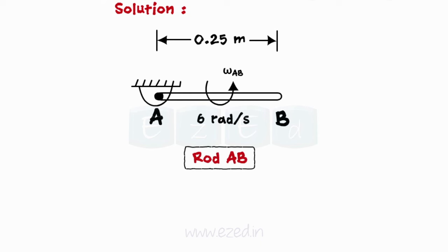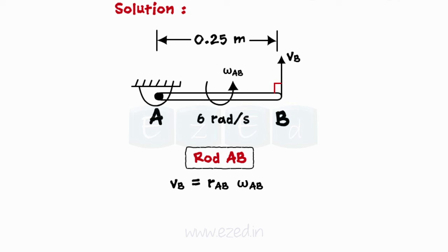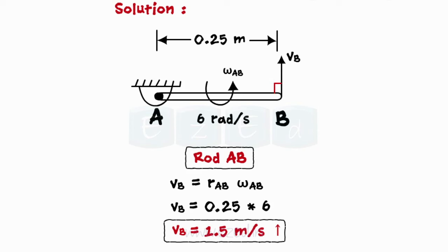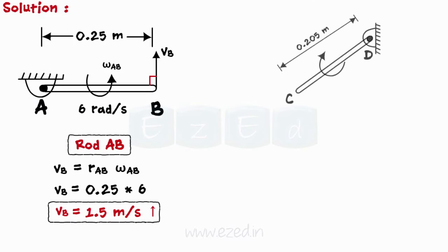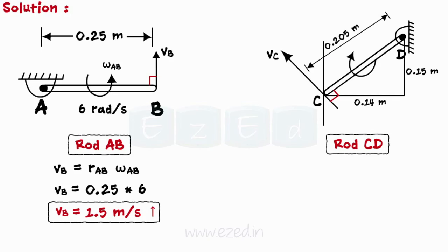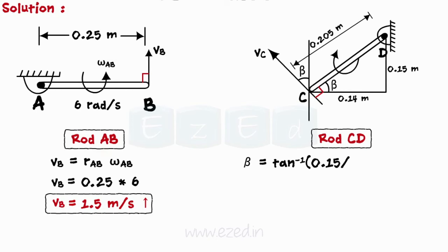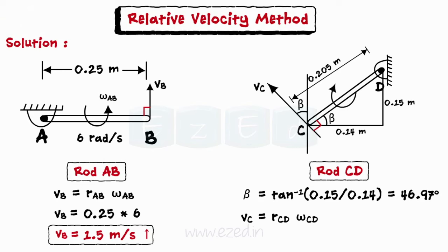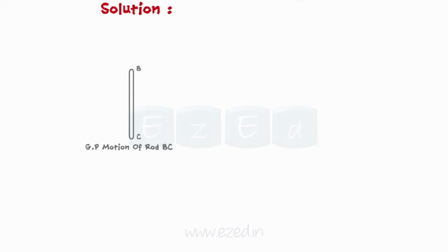Consider rod AB, which rotates about point A. The direction of velocity at point B is perpendicular to the radial distance AB. Using the relation between linear velocity and angular velocity and substituting the values, we get velocity VB as 1.5 meters per second. Consider rod CD, which rotates about point D. The direction of velocity at point C is perpendicular to the radial distance CD. Let beta be the angle made by VC with the vertical; from the geometry, beta is 46.97 degrees. Using the relation between linear velocity and angular velocity and substituting values, we get equation 1.